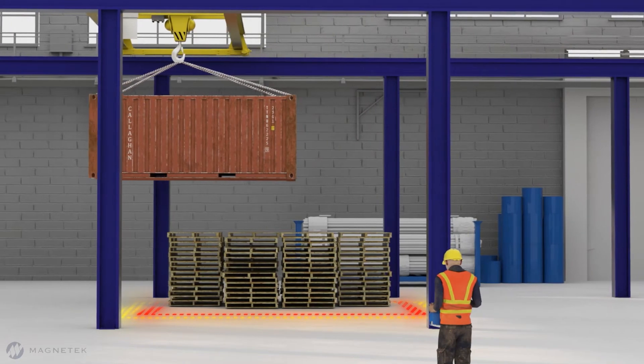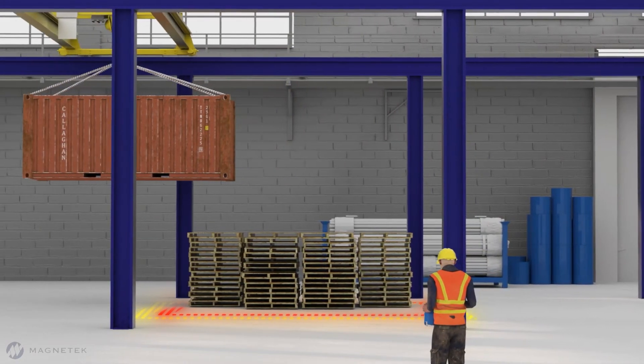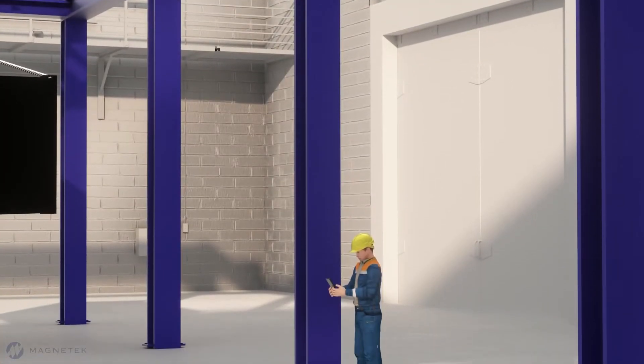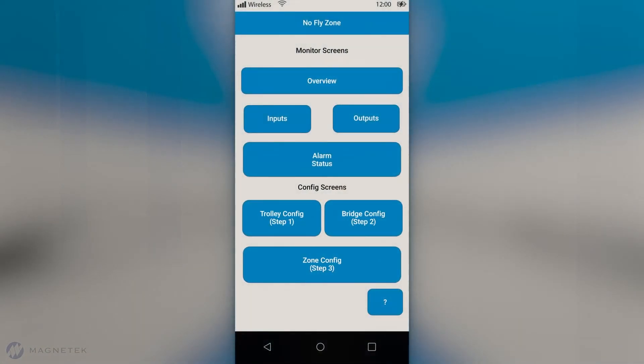As you see here, using Intelliprotect, the operator can easily ensure the hoist clears the load. How does it work?